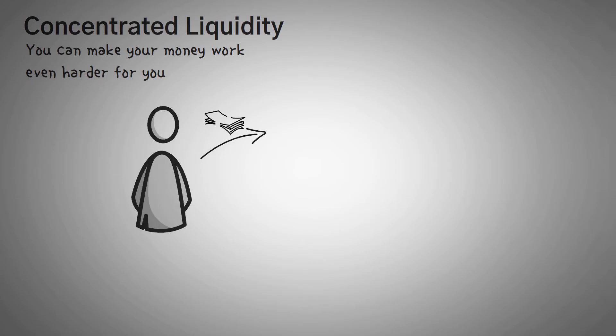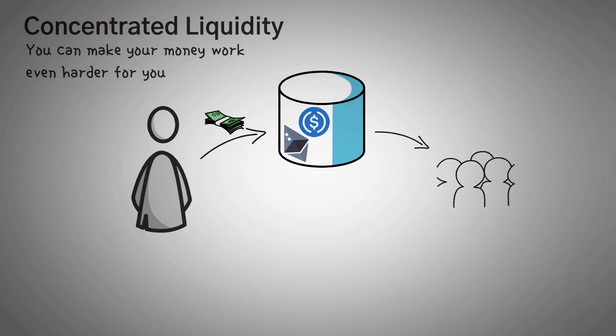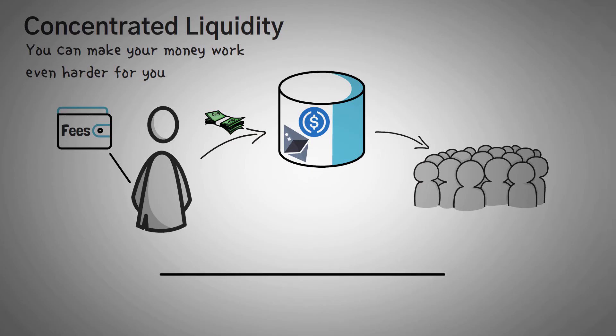Now, the benefit of concentrated liquidity is that you can make your money work even harder for you simply by giving it some rules. Let me explain. Normally, when you want to be an investor and put your money into a Uniswap pair like USDC or Ethereum, you lend your assets to the pool. Now, the pool lets other traders trade your assets back and forth, basically collecting very small fees from those traders so that they can pay you. This way, traders are happy to trade and you're happy to lend your money.